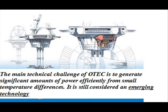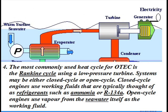The most commonly used heat cycle for OTEC is the open cycle. Closed cycle engines use working fluids that are typically thought of as refrigerants, such as ammonia or R13, as a working fluid.